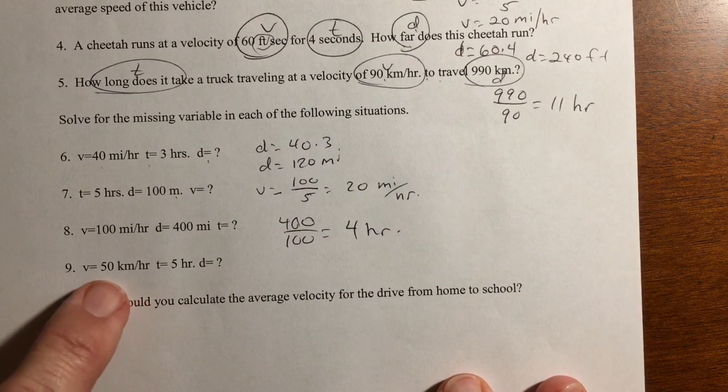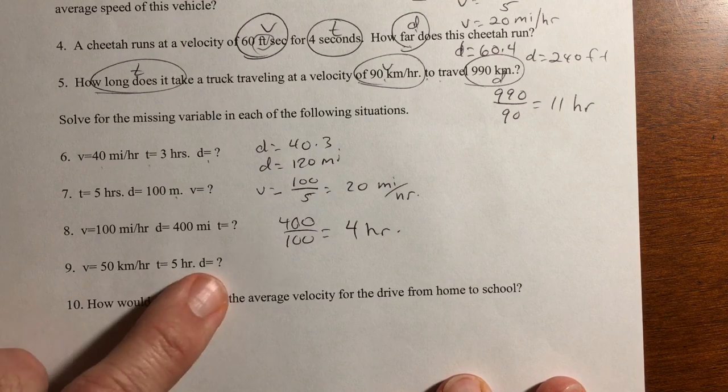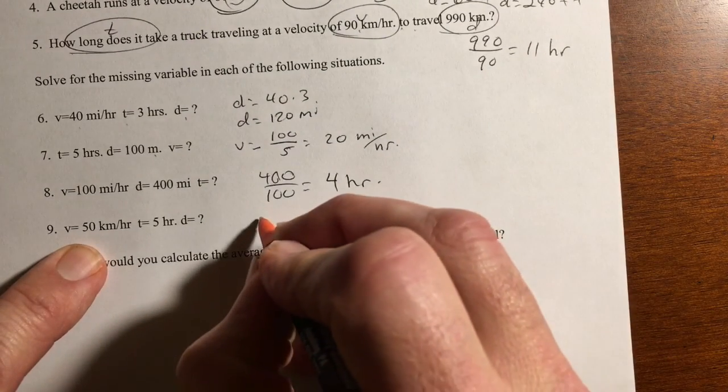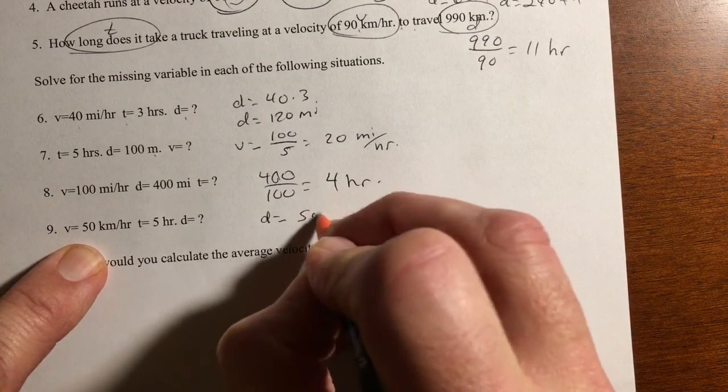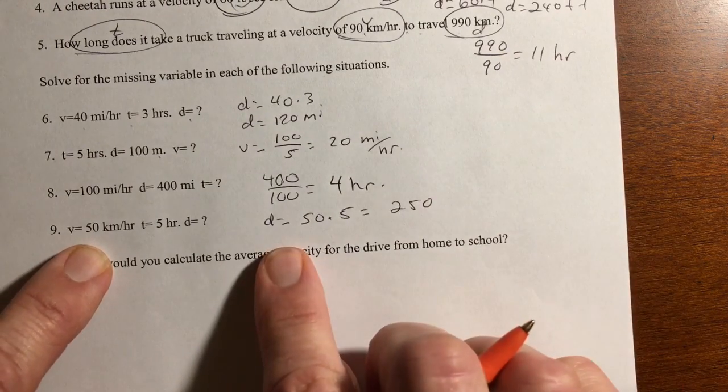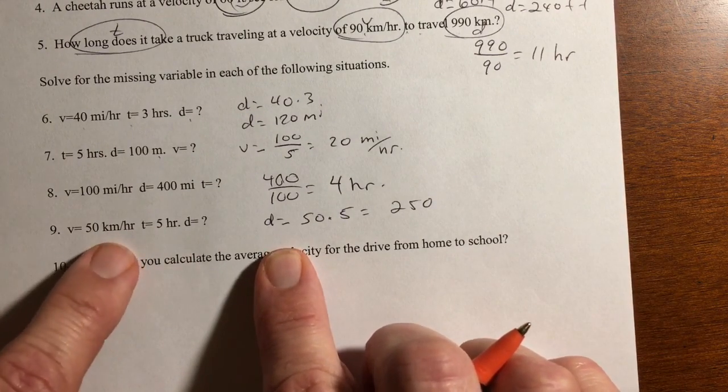Number nine. Given V and T, find the distance. Velocity times time. So D equals 50 times 5 equals 250. And looking at our units here, it's going to be kilometers.